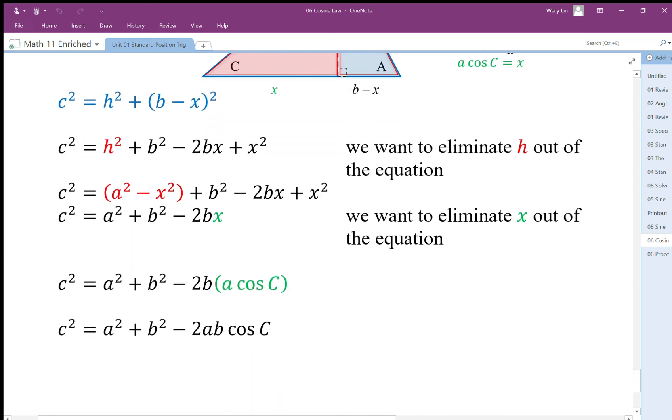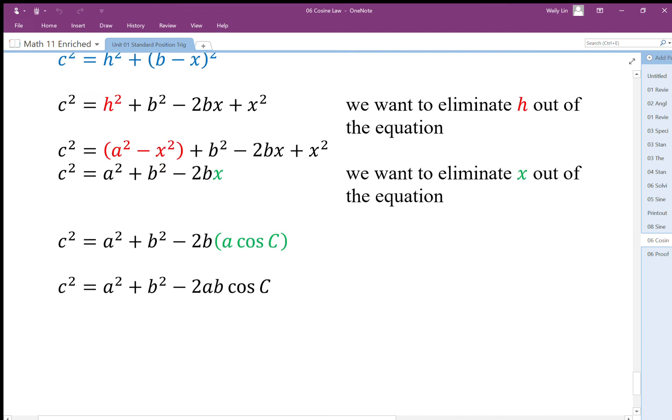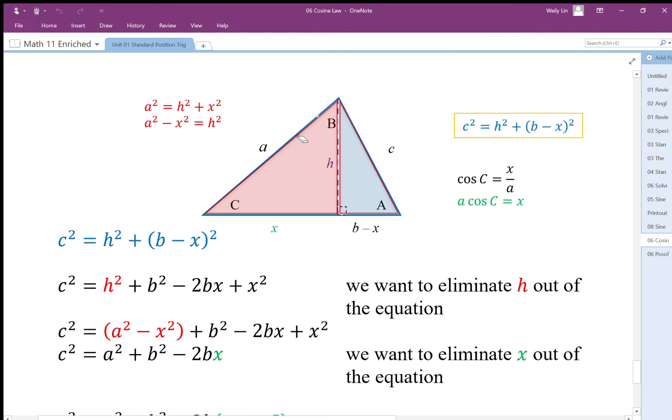So there it is, there's our cosine law, and this is a proof of the cosine law. It's through splitting up into two right triangles and through the shared height that we connected the Pythagorean theorem for these two sides of the triangle.